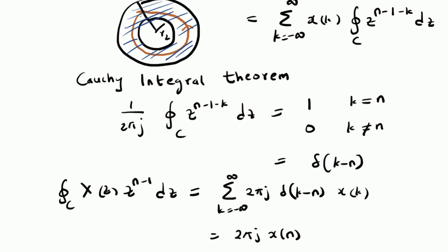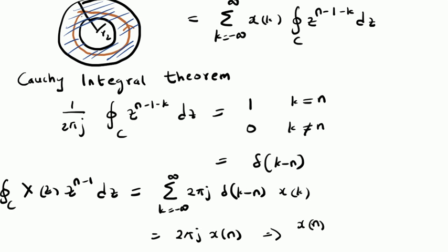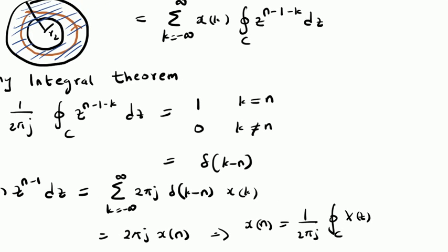Since our goal is to derive the value of X of n from X of Z, we can rewrite this equation as: X of n is equal to 1 over 2 pi j times the integral of X of Z times Z power n minus 1 dz. Note that this integration is over a closed contour — it is the area where X of Z converges.